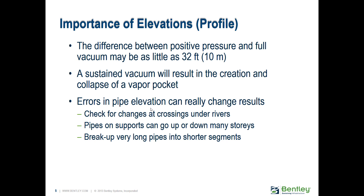When it comes to elevations and profile, the difference between positive pressure and a full vacuum is basically 10 meters. The vapor pressure limit at most elevations is 10 meters below zero. A sustained vacuum will result in the creation and collapse of vapor pockets. Any high points with potential for vapor pockets to form are very important to consider, and errors in pipe elevations can significantly impact the transient response.